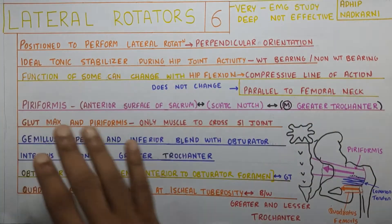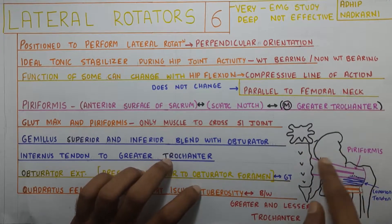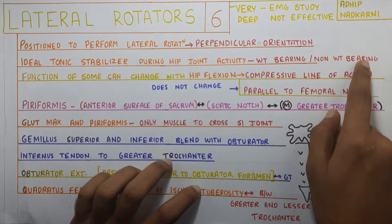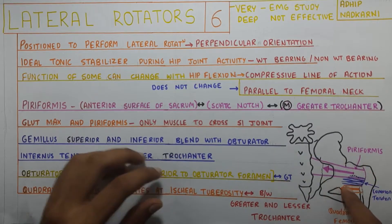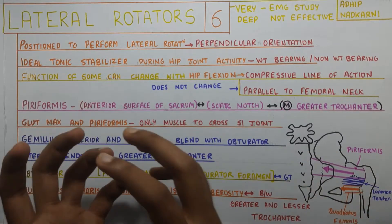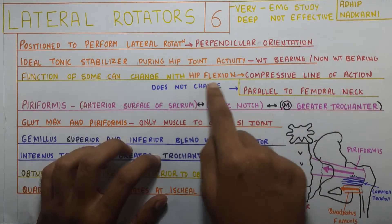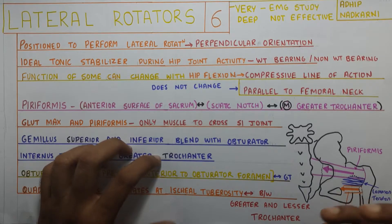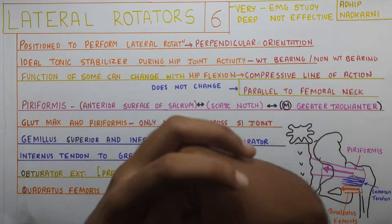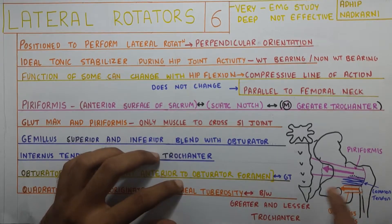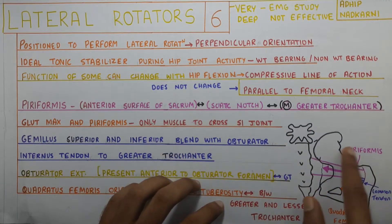They are very ideal for tonic stabilization at the hip joint in weight-bearing as well as non-weight-bearing. If you look at their position, they are very parallel and they keep your femur tight in place — that is the tonic stabilization. Their function can change with position, but with hip flexion they'll create a compressive force and keep the femur in place at the acetabulum, just like your rotator cuff in the shoulder joint.